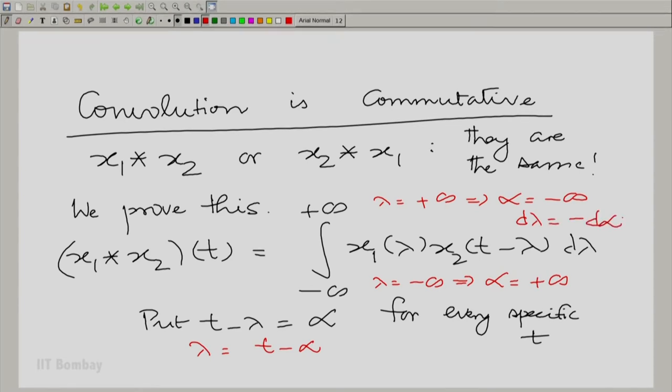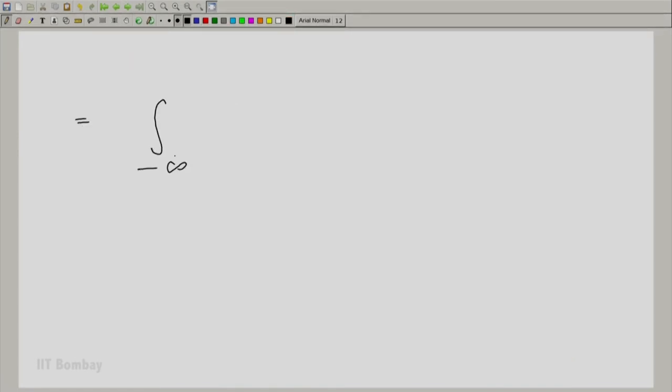If we make these replacements, you notice that you can replace d lambda by minus d alpha. t minus lambda is just alpha. Lambda is t minus alpha and then you have a minus sign and these limits also reverse. The minus sign together with the reversal of limits cancels one another out. So, we could rewrite this as integral from minus infinity to plus infinity x_1(t minus alpha) x_2(alpha) d alpha. And that is the same as x_2 convolved with x_1 evaluated at t.